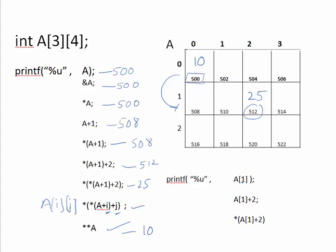Writing a[1] is the same as *(a+1), which is 508. Then a[1]+2 gives the address 512. Applying asterisk: *(a[1]+2) gives the value 25 — the same result as before. So these are all the possible syntaxes used for accessing arrays using pointers. Hope you have understood the syntax for pointers. Thank you for watching.